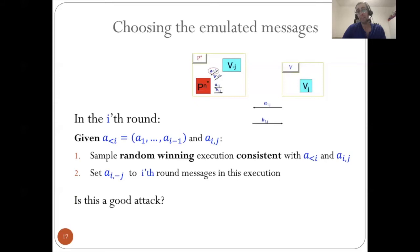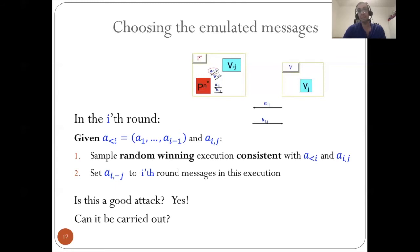Is this a good attack? It turns out yes — if you can implement it, parallel repetition reduces soundness by an optimal rate of N. But can it be carried out efficiently? Not always. In the public coin case, since the verifier's messages are just random coins and we know its internal state, we can emulate a random continuation of the entire execution until the end, including the real verifier V, and check whether P-N-star wins all verifiers, repeating until it does.